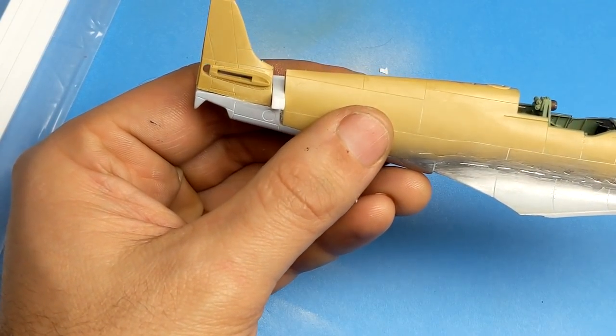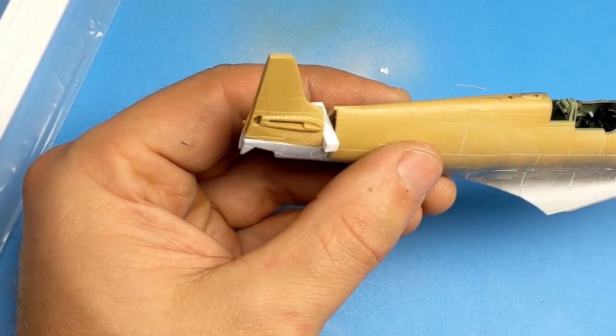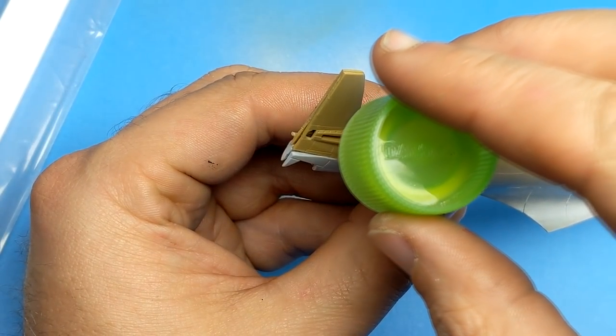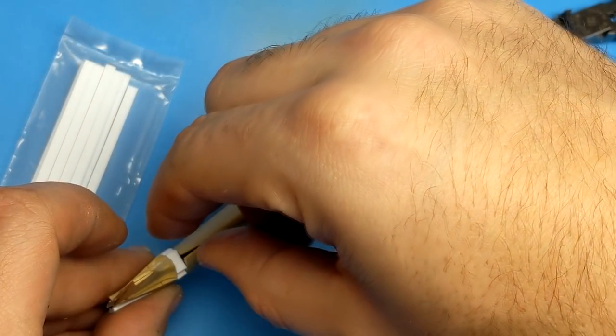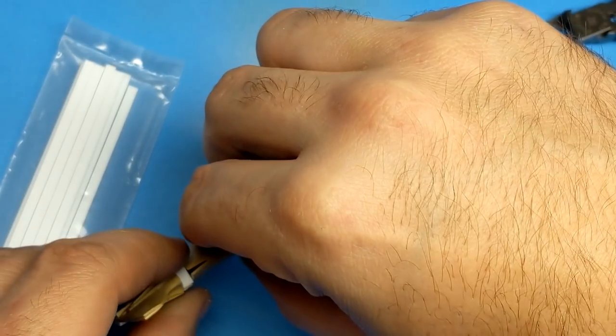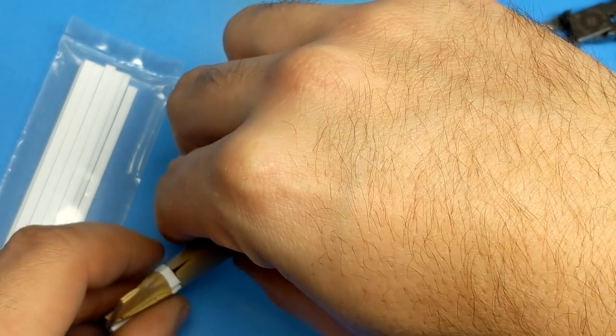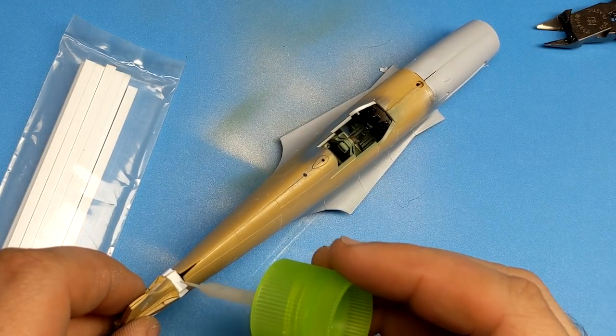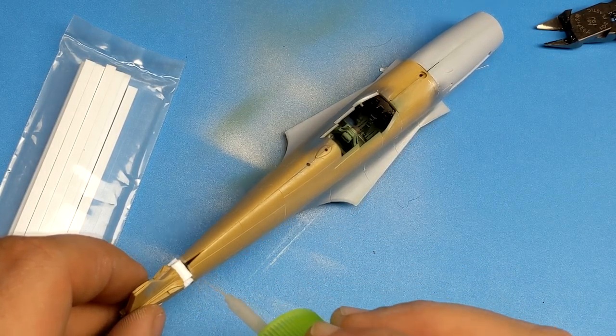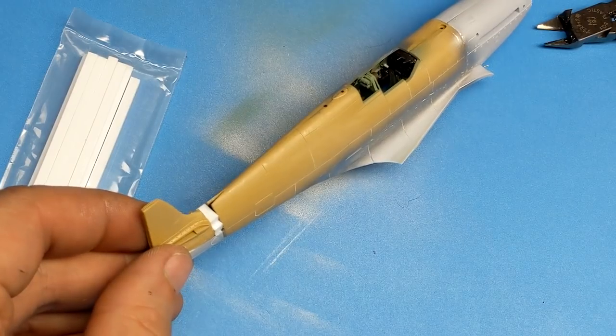Because when you put primer on, every little imperfection starts to show, and it felt like I was constantly going back to fix a seam line here or add in another panel line where there was supposed to be one. Just to give you an idea of the amount of work that had to go into all of that, I've decided to leave in a few minutes of footage just to show all the sanding and scribing that was taking place. And this should give you an idea of the amount of work involved.